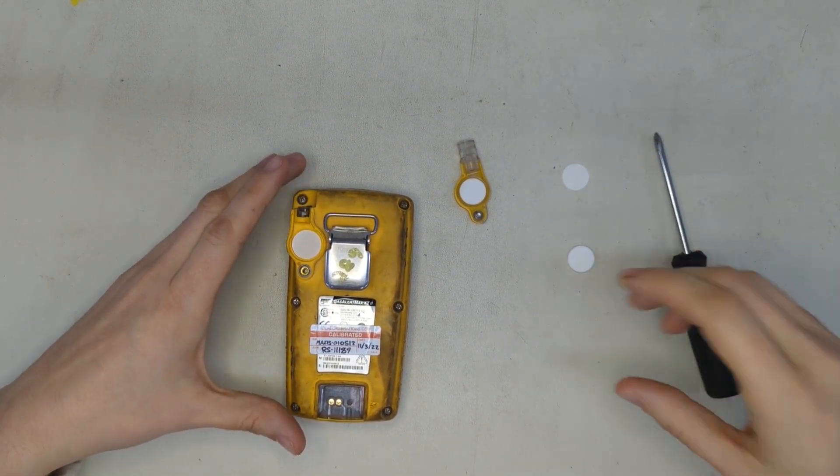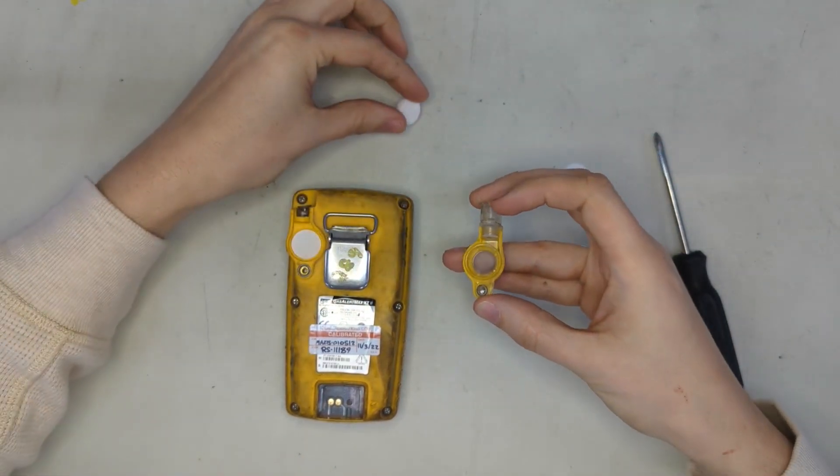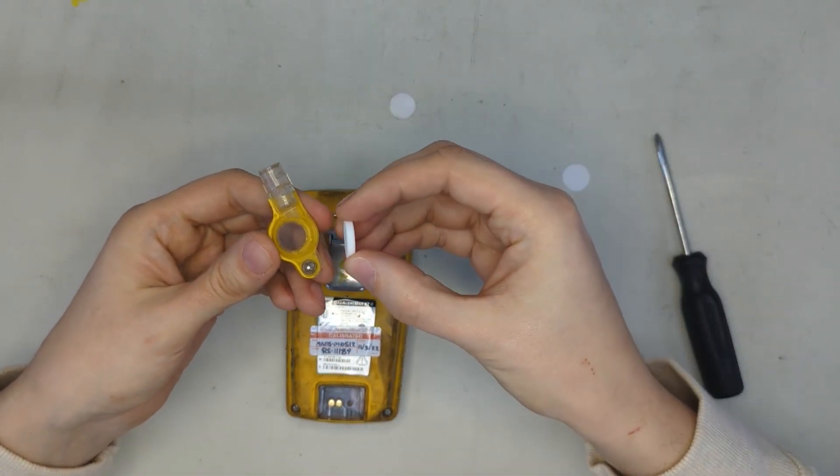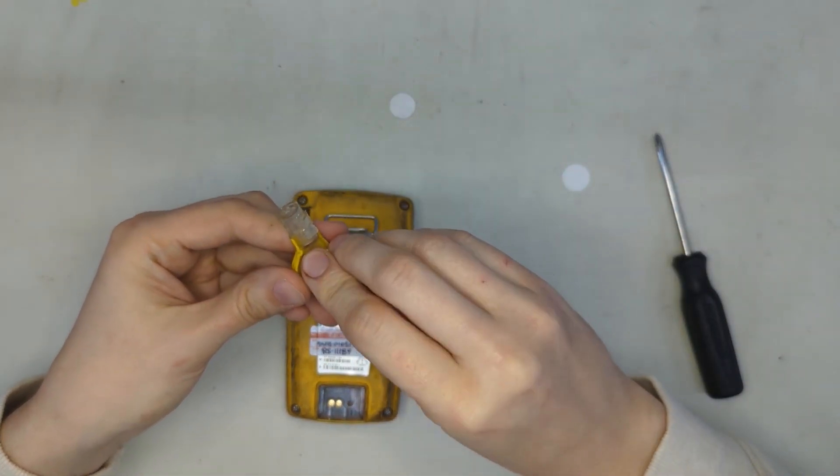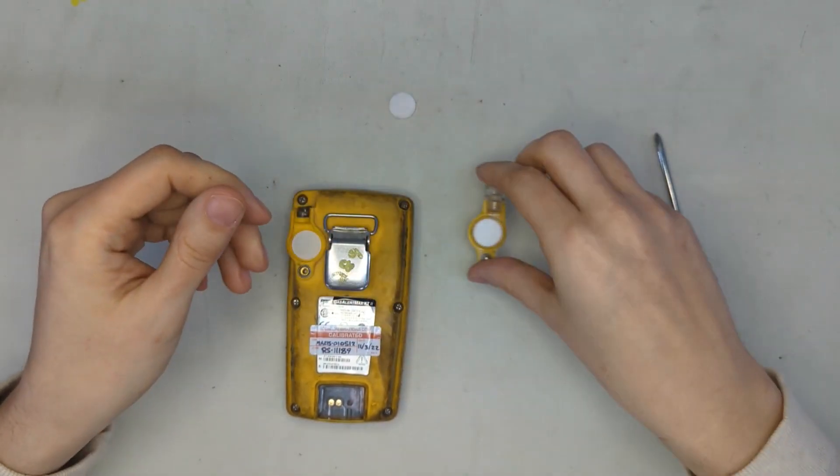So first things first, we can replace this one here. Go ahead and take it out and then we'll grab our new filter. You can see this is the thicker ceramic disc filter. This goes into the inlet adapter like that. You just push it right in and put that to the side.